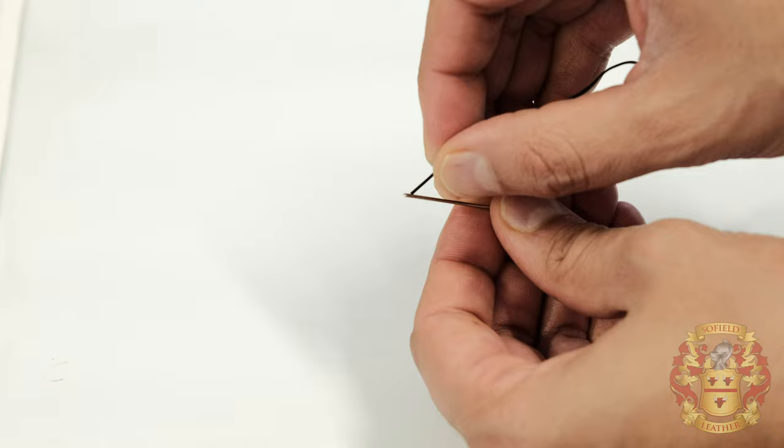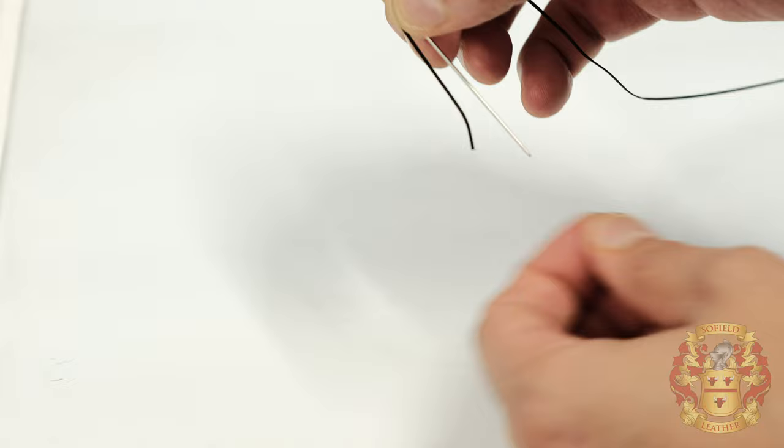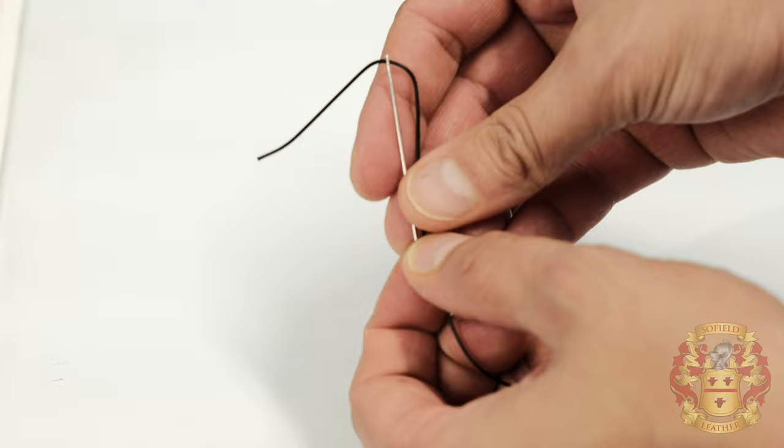Go through the eye. Pull this loop out a little bit, almost about the same length. And you're going to pierce the thread through itself.